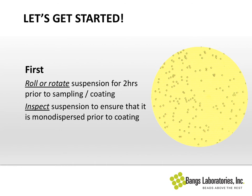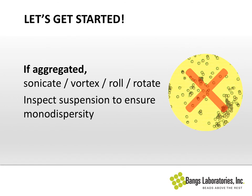Our standard magnification for viewing under the microscope is going to be 400x — so like a 10x objective and 40x magnification. If you are first sampling from the bulk suspension and you find that the material is aggregated, you should use some sort of physical method to break up aggregates and return it to a monodispersed state. Typically we would sonicate it, vortex it, roll, and rotate. The idea is that sonication will blast apart the aggregates and rotation will redistribute surfactant and keep particles from clinging to one another. Then again, inspect the suspension to ensure that it's monodispersed.